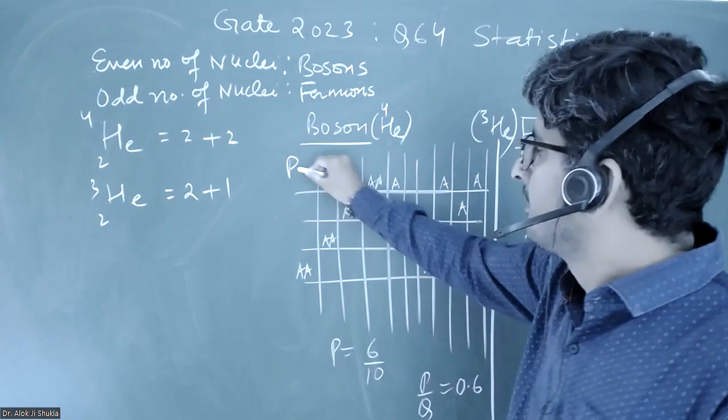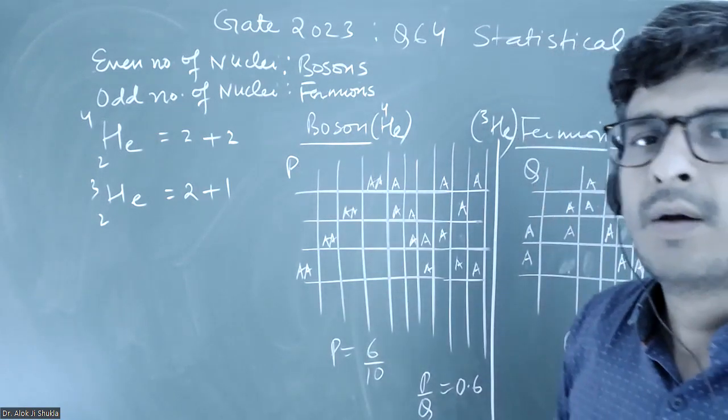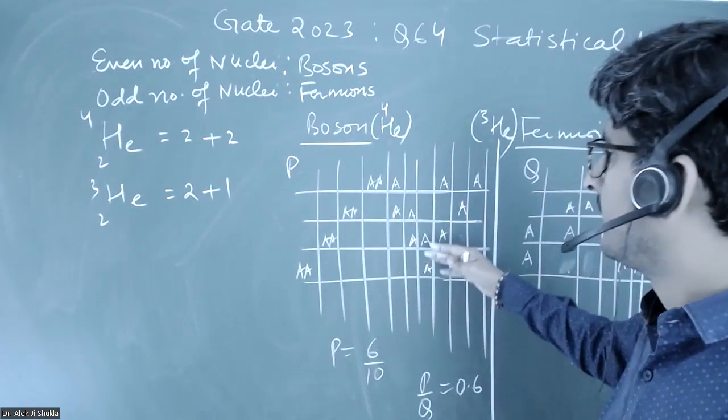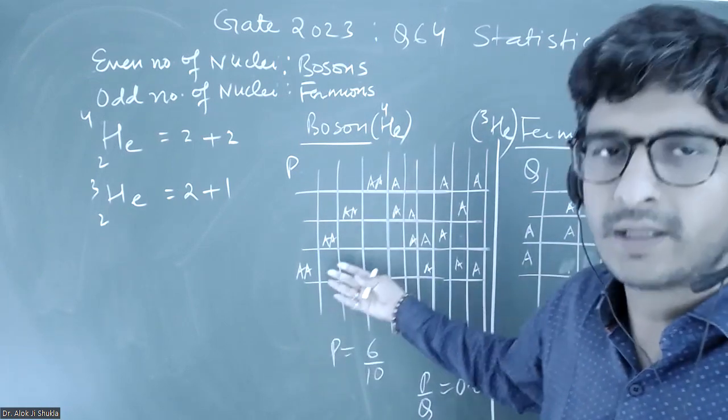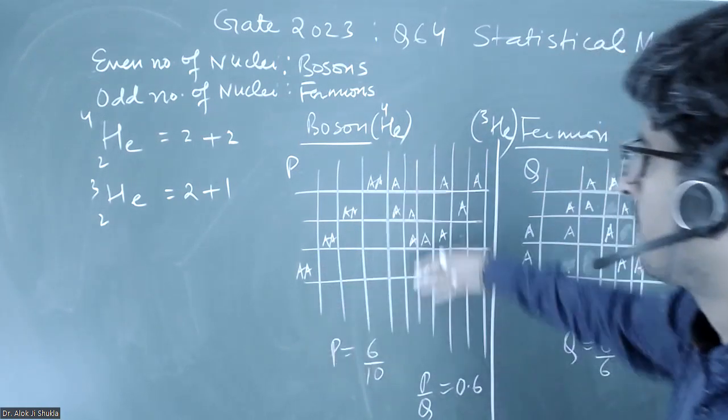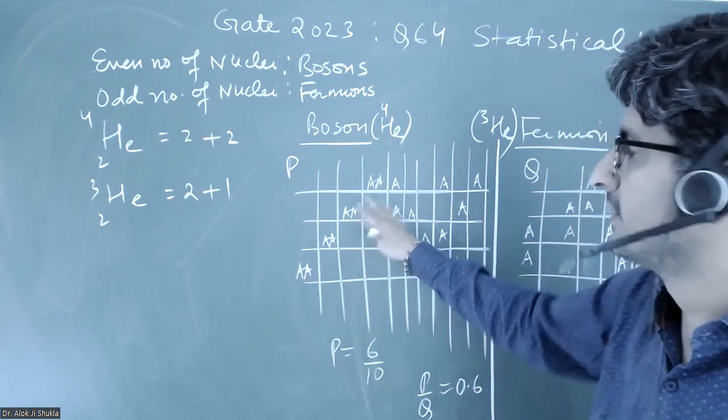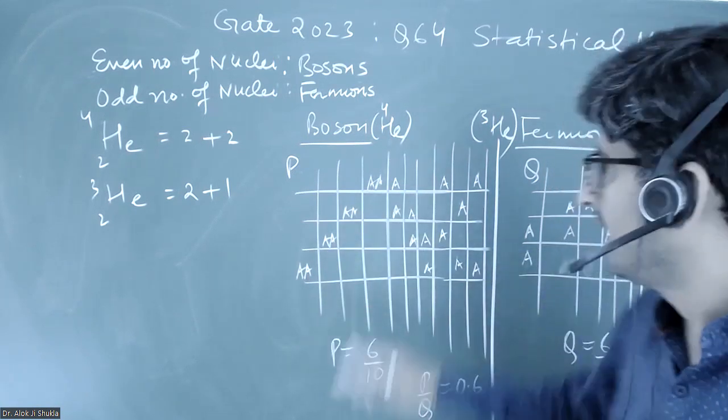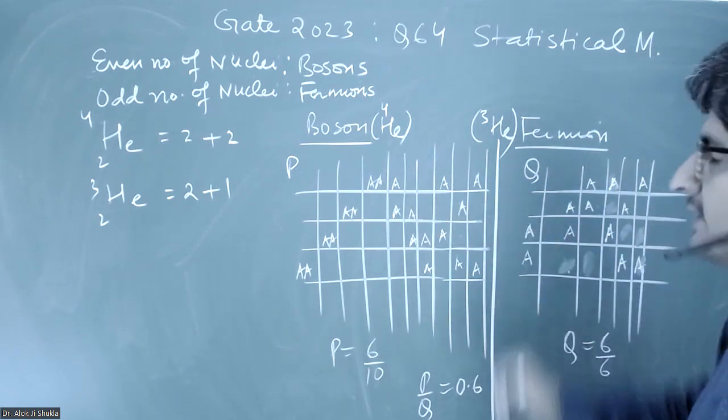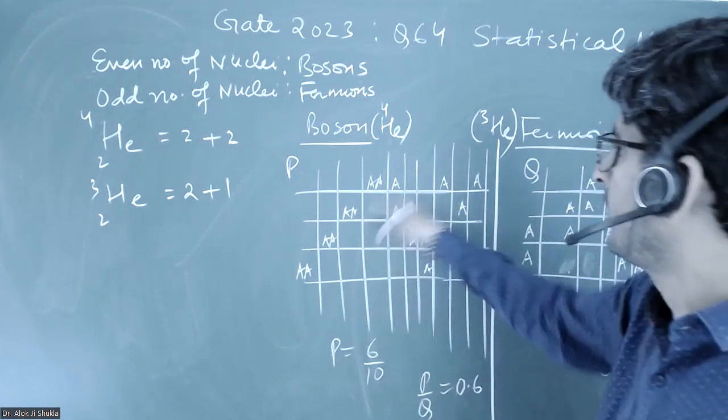P is the probability of occupying different energy levels, that means they are not in the same level. For boson, they can be in same level also, so in four ways they can be in same level and then the rest of the six ways they can be in different levels. So probability of being in different levels will be 6 by 10, because total are ten number of ways.